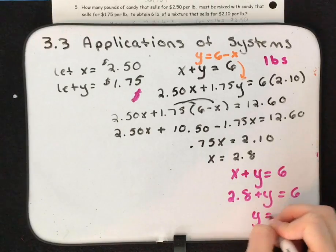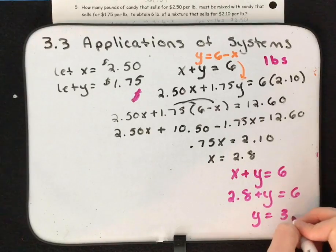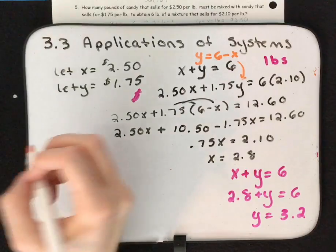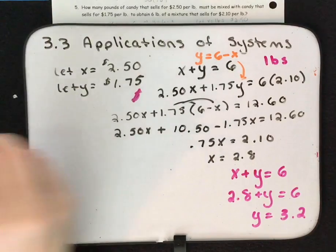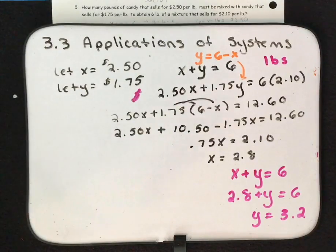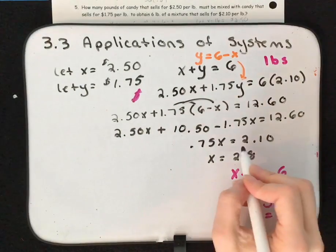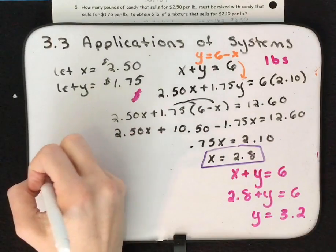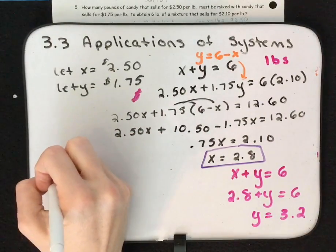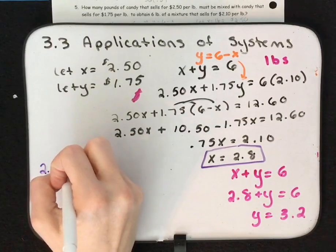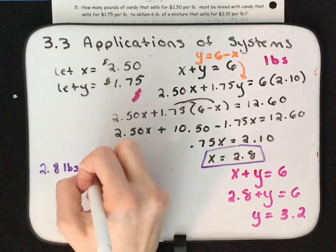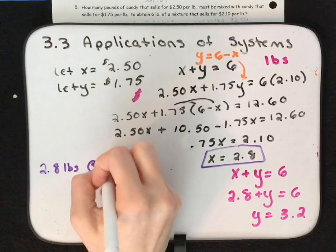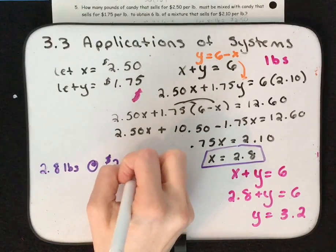So this means we need 2.8 pounds of the candy that sells for $2.50 per pound and 3.2 pounds of the candy that sells for $1.75 per pound, giving us a 6-pound mixture that sells for $2.10 per pound.